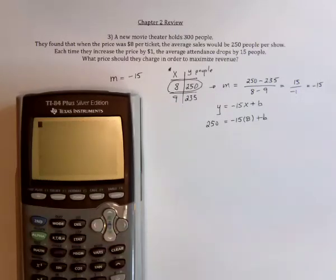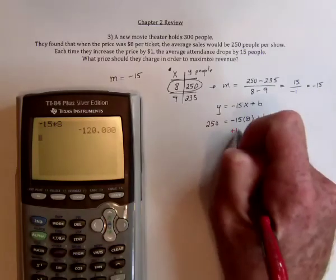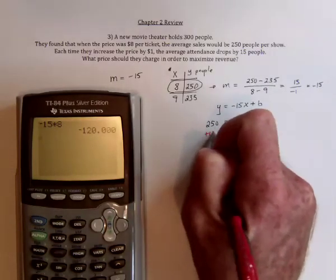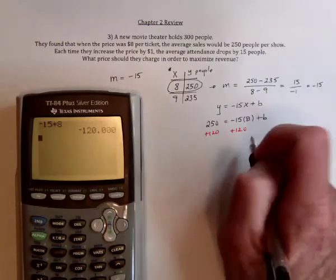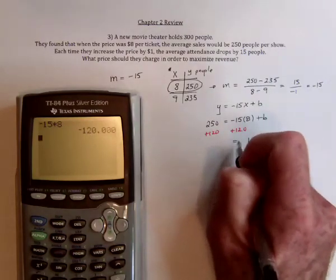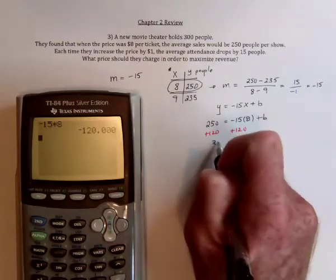So it's going to be 15 times 8, so negative 120. Then add 120 to both sides. So B turns out to be 370.